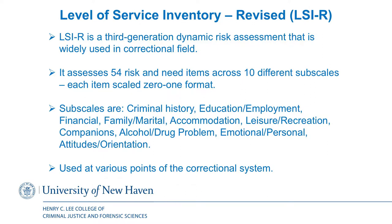Other subscales include accommodations — relating to housing. If they live in a high-crime neighborhood, that poses a risk because they're around others who commit crime. It looks at how they spend their time: do they have hobbies or do they mostly just hang out? Companions — who they hang with. It looks into alcohol and drug problems. Emotional and personal — a history of mental health issues. And then attitudes: pro-social or anti-social.